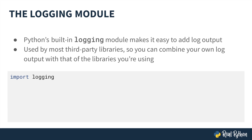Python's built-in logging module makes it easy to add log output to your program. It's used by most third-party libraries, so you can combine your own log output with that of the libraries you're using to create a comprehensive log. And just like with any other module, accessing it is super simple — it's just import logging.